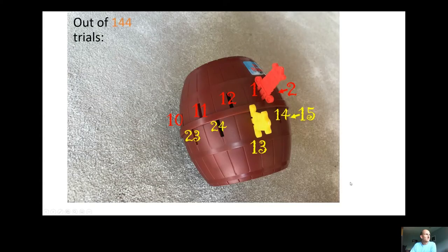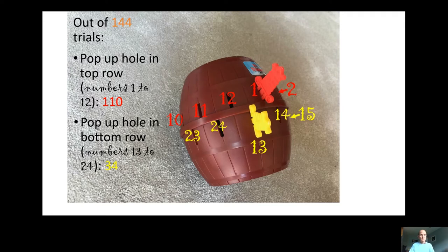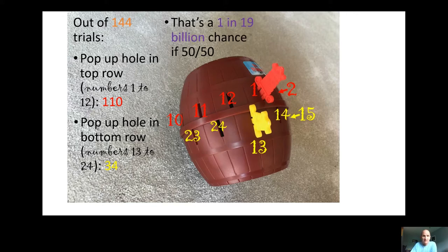So, out of 144 trials, the pirate popped up on a hole in the top row 110 times, with only 34 times the pirate being triggered by a bottom hole. If that were a 50-50 chance of top or bottom, then we're talking a 1 in 19 billion chance of this happening. I'm using the binomial distribution to calculate that.